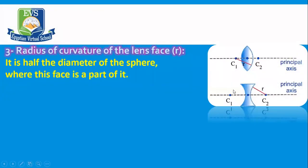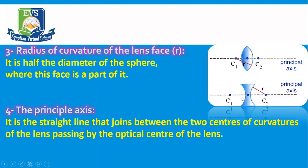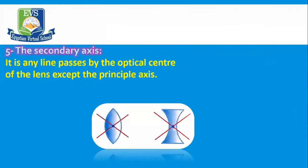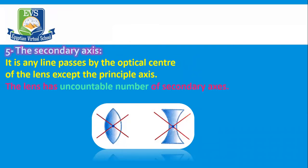Radius of curvature: this line shows the radius of curvature — it is half the diameter of the sphere of which this face is a part. The principal axis: this line shows the principal axis — it is a straight line joining the two centers of curvature of the lens passing through the optical center. Each lens has only one principal axis. The secondary axis is a line that passes through the optical center of the lens, other than the principal axis. The lens has an uncountable number of secondary axes.